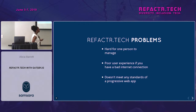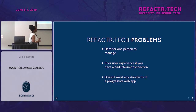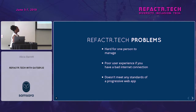Why did we decide to use Gatsby? The original refactor.tech site was pretty hard for one person to manage — it was a template we found online, it was sloppy, it didn't perform well, and making changes was very tedious. Also, if a user visited the site on spotty internet access they'd have a poor experience, and the site did not meet any of the guidelines that make a progressive web app.